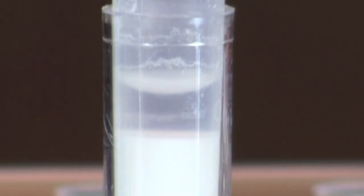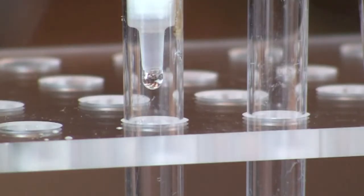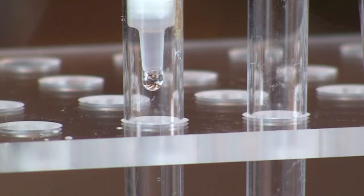Allow the column to drain the storage buffer in collection tube number 1, until the bottom of the meniscus is 1 to 2 millimeters from the surface of the resin.